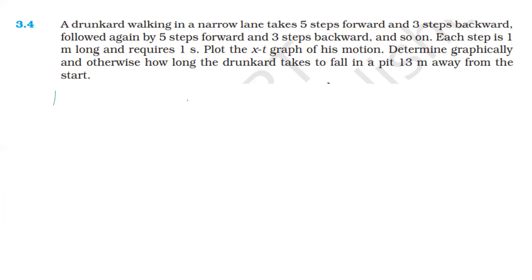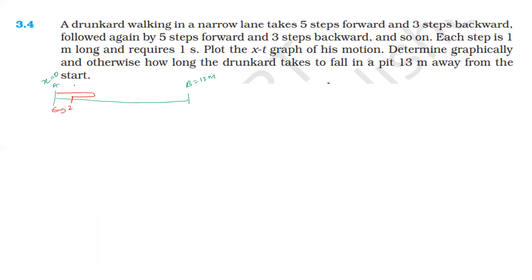The person moves from point A to point B. A is at zero distance and B is at 13 meters distance. Looking at this graph: we have 5 steps forward and 3 steps backward. After 5 steps forward that is 5 seconds, then 3 steps backward that is 3 seconds, giving a total of 8 seconds per cycle. The net displacement per cycle is 2 meters.